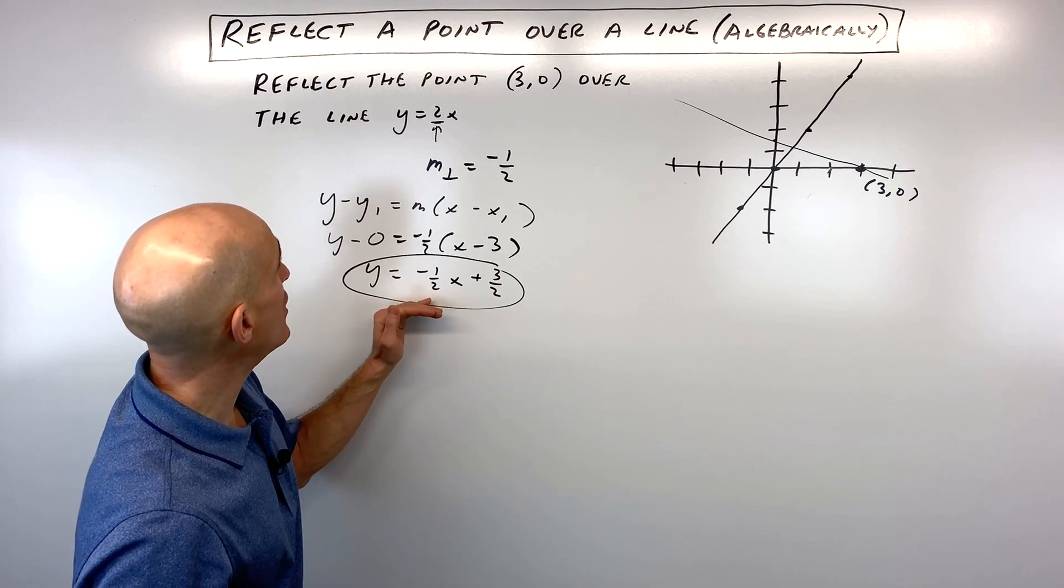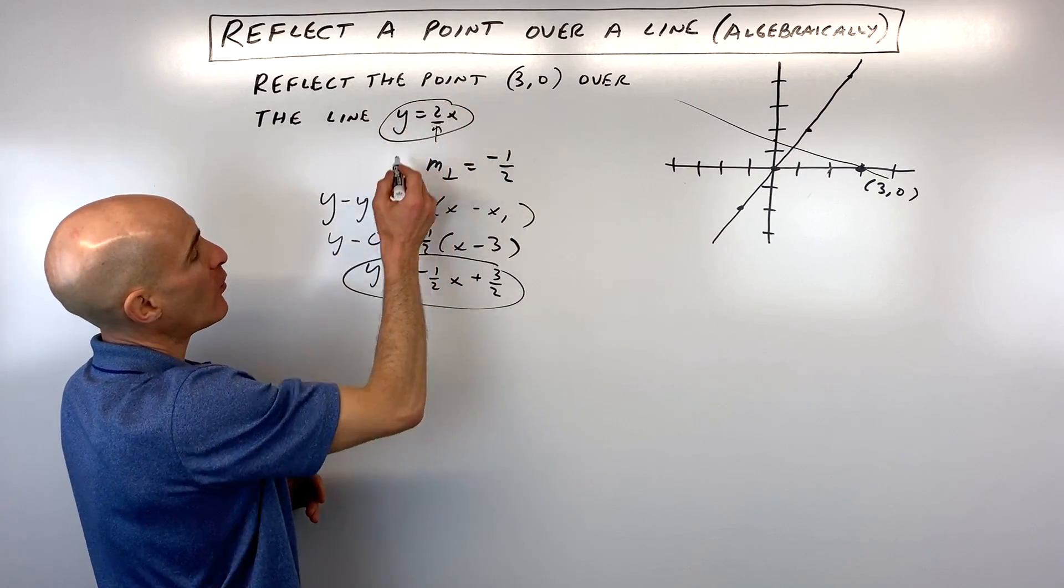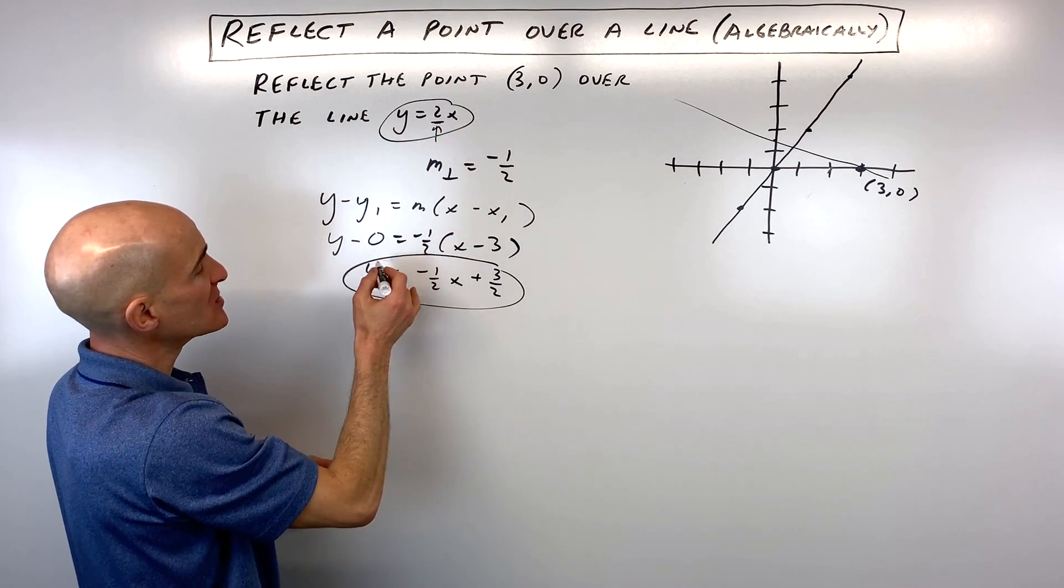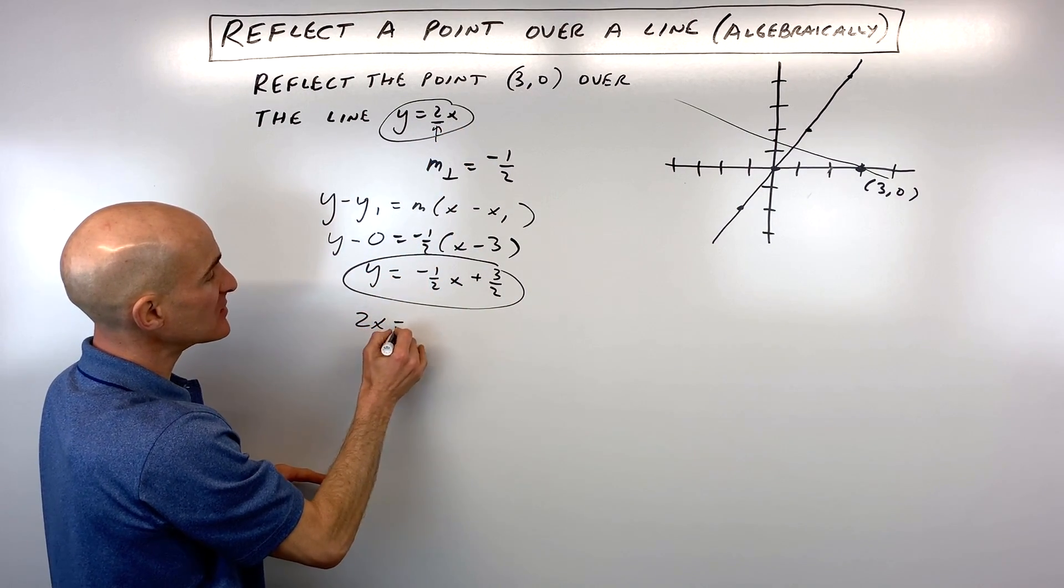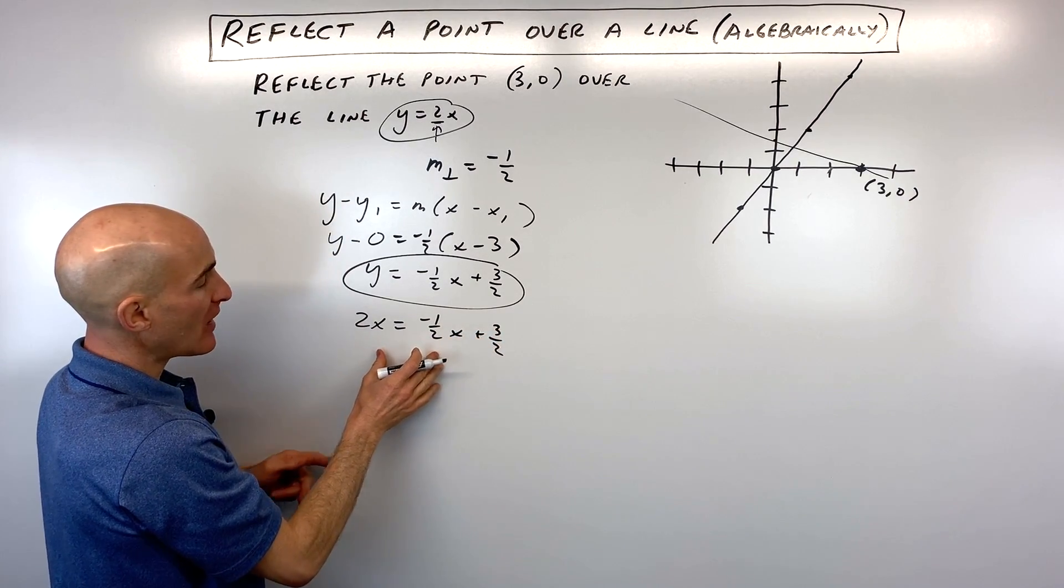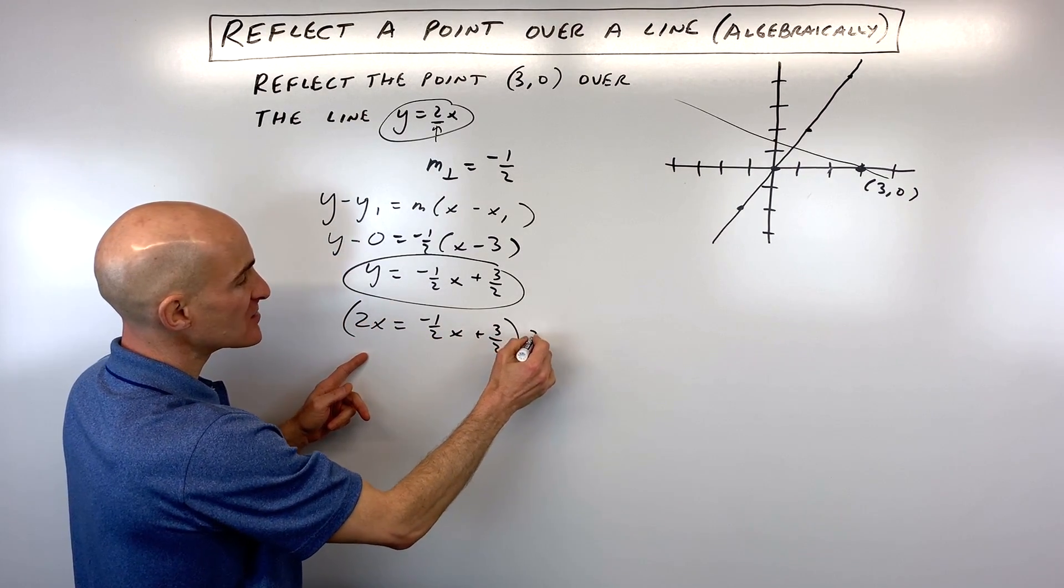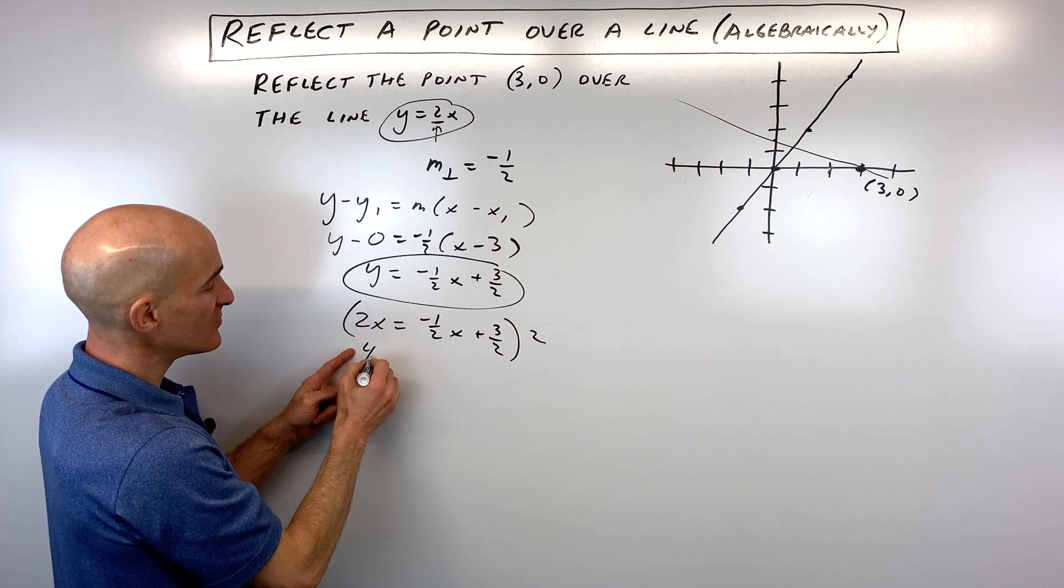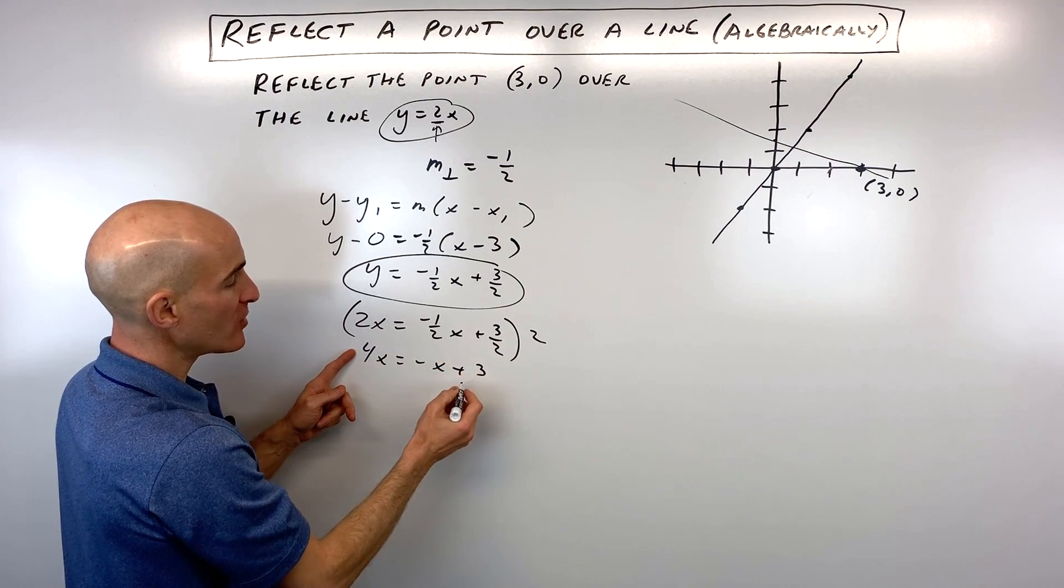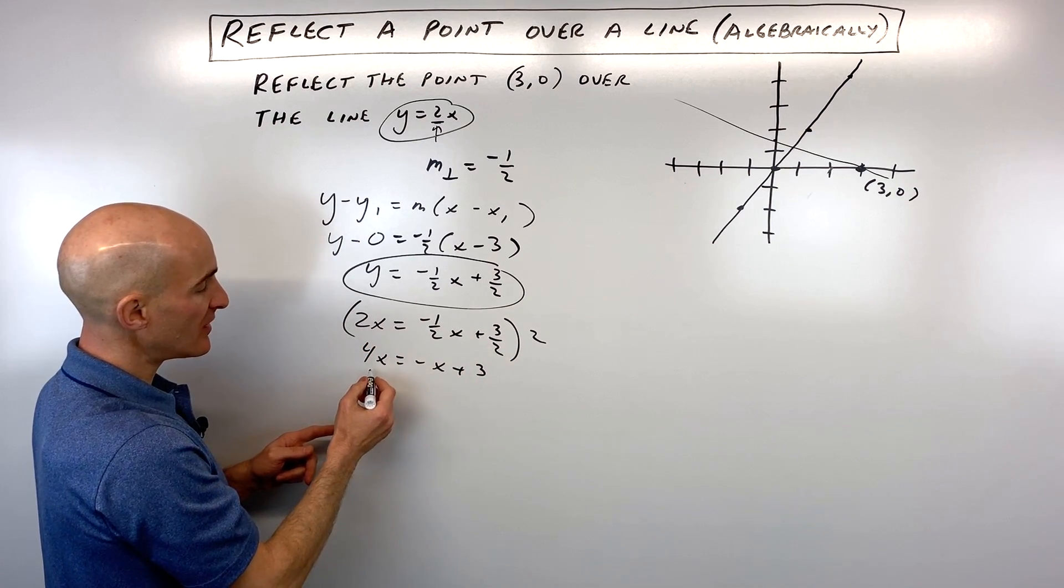We're going to solve a system of equations. We've got y equals 2x and y equals negative 1 half x plus 3 halves. We can do a substitution. Since y equals 2x, let's put that in place of y. Then we'll solve for x, but I'm going to clear the fractions by multiplying everything by 2. So this is going to be 4x equals negative x plus 3.